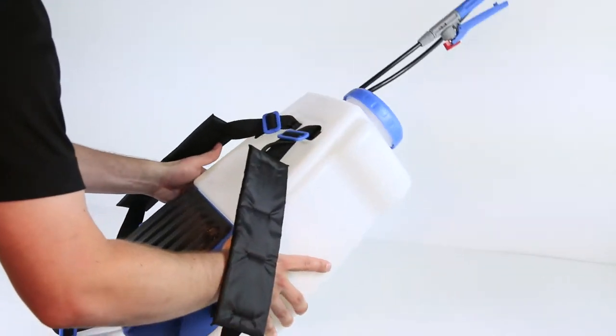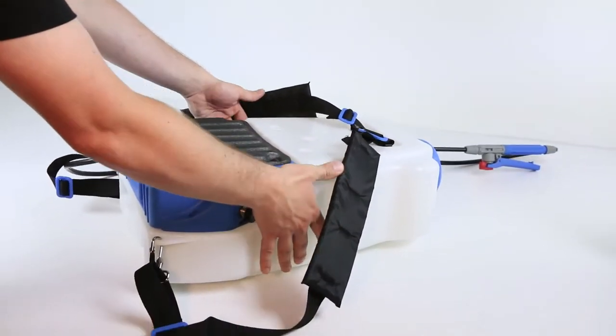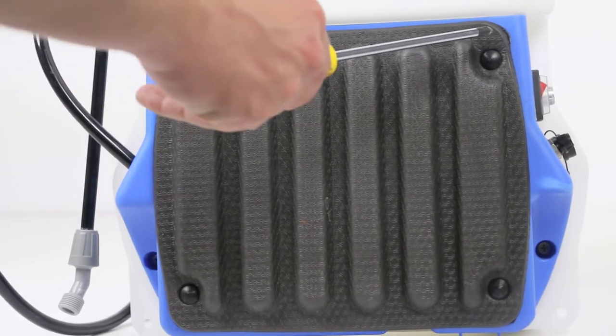Carefully lay down your sprayer on the clean work surface. There are six screws holding the cover in place.